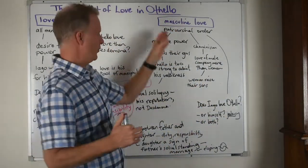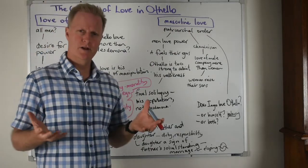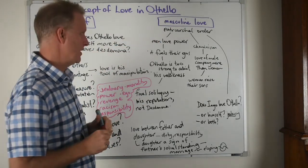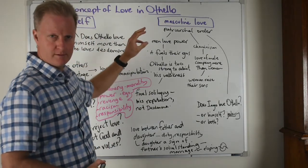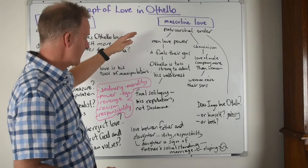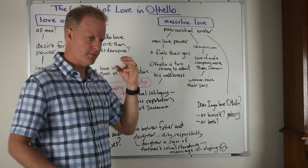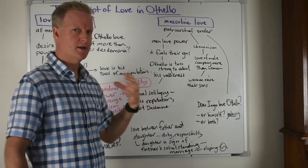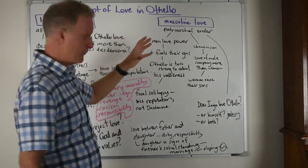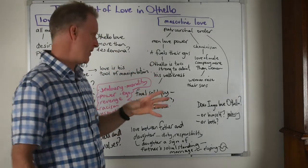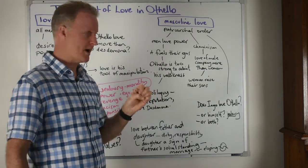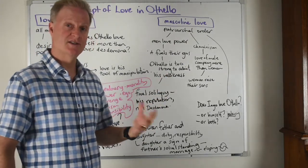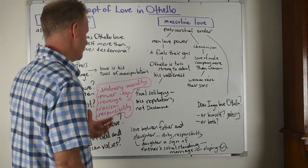Another thing we can look at — for want of a better term I've called it masculine love. They're living in a patriarchal society and the order of the world is governed by patriarchy. Men are fixated with power — they love power. It fuels their egos, gives them a sense of purpose, understanding, and belonging. Othello is in a position of power but he's too strong and too proud to admit he has a weakness, and he doesn't understand women or civilised society.